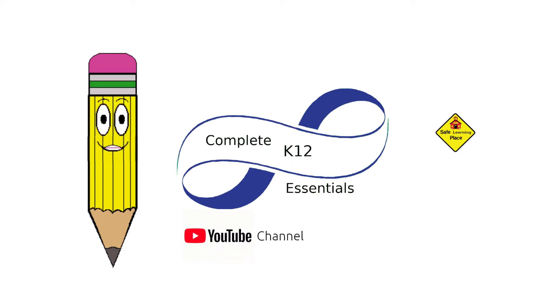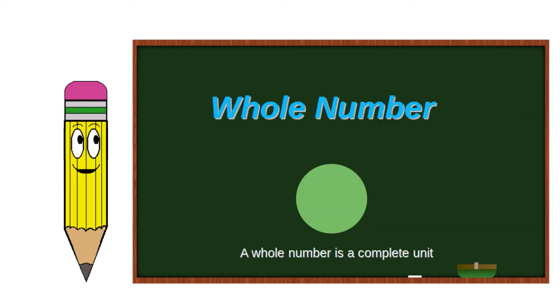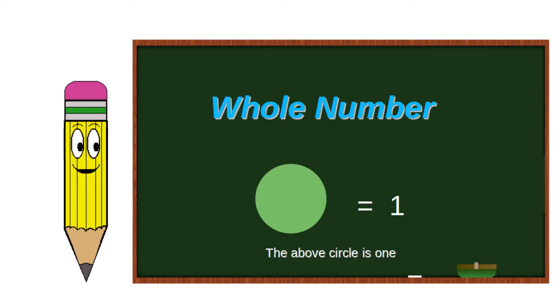Welcome to Complete K-12 Essentials, 5th grade fractions review basic concepts. A whole number is a complete unit. The above circle is 1.